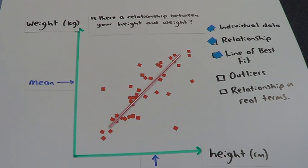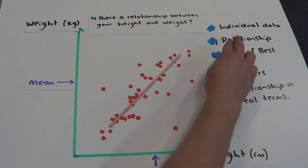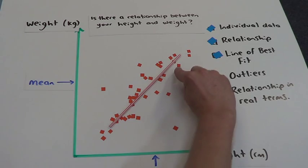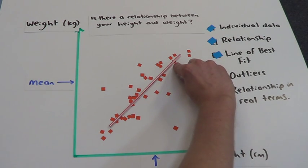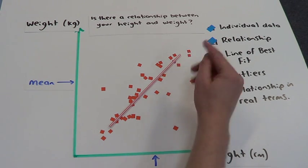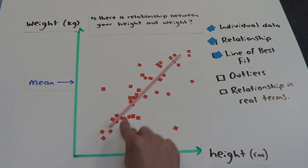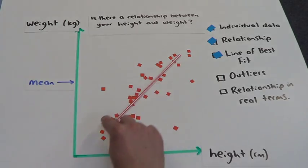Now outliers. Outliers are identifiable individual people, individual points of data that don't fit the trend, don't fit the relationship. If we look here, just that one there, that individual point of data is sitting right underneath the line of best fit. It's right where I'd expect it to be. And these guys all along here are fitting pretty closely.